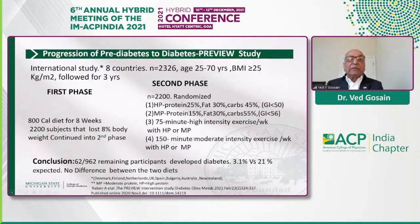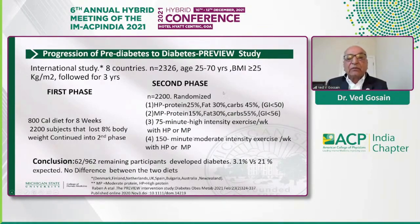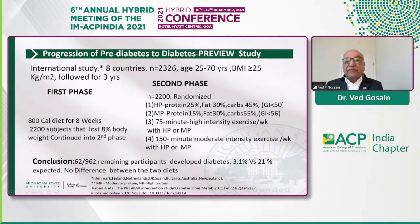A more recent international study looked at progression of prediabetes to diabetes. In the first phase, patients were assigned to a very low-calorie diet of 800 calories, and 2,200 subjects lost 8% of body weight. Those who lost that weight were randomized to a high-protein diet (25% calories from protein), a moderate-protein diet (15% calories from protein), and either 75-minute high-intensity exercise or 150-minute moderate exercise. At the end of about three years, only 62 out of the remaining 962 patients developed diabetes — approximately 3% — whereas 21% would have been expected.